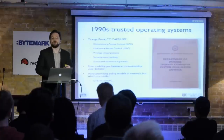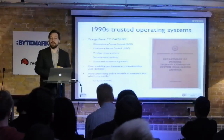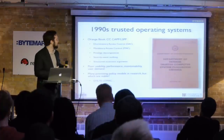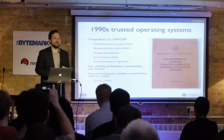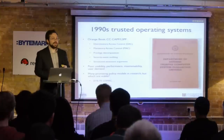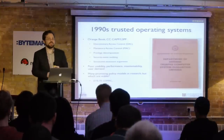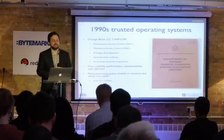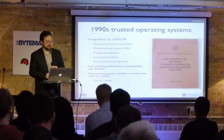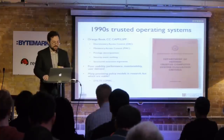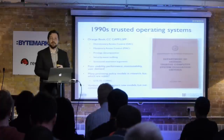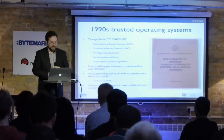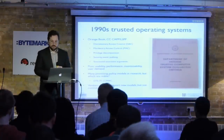An interesting thing happened as a result: you had a security research community that cared a lot about access control. The research community said maybe multi-level security — with labels like classified and confidential — was a bit annoying, so why not try other things? They played with type enforcement and low-watermark mandatory access control, a kind of taint-based security model for operating systems. OS vendors, especially open source vendors, looked at all this and said it's really neat but they didn't want to implement them all, especially since the researchers couldn't agree on what they wanted — they remembered what happened last time.